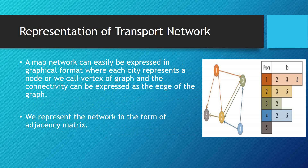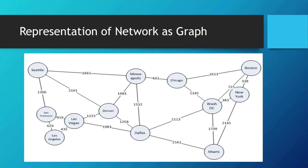How do we represent the transportation network for a computer? We consider the transportation network as a form of graph. A map can easily be expressed in a graphical format where cities represent the nodes — or vertices — of the graph. The connectivity can be expressed as edges, and the distance between them as the weight of the edge. We represent the network in the form of an adjacency matrix, as shown in the diagram here — a brief example with cities as nodes and distances in miles as edge weights.